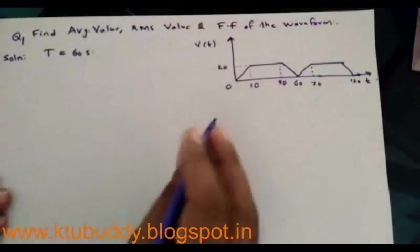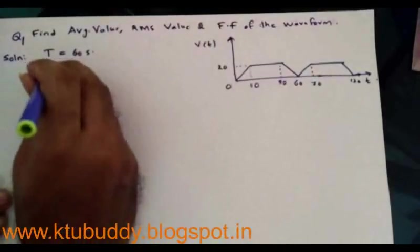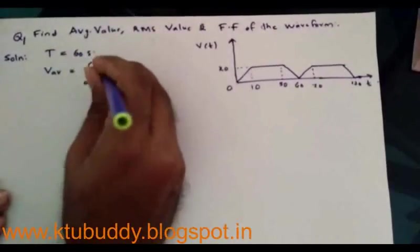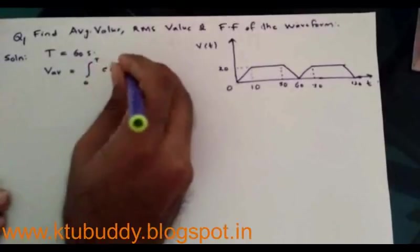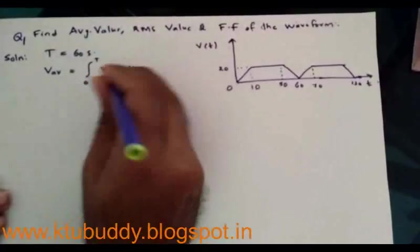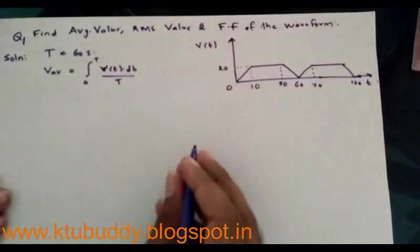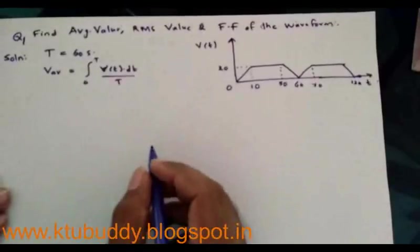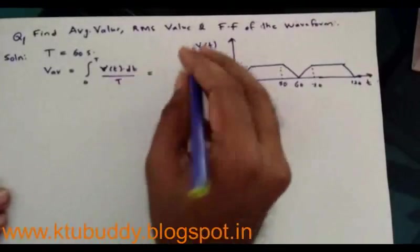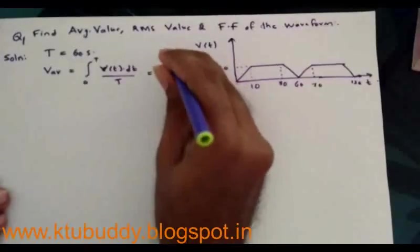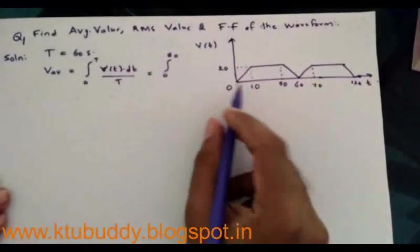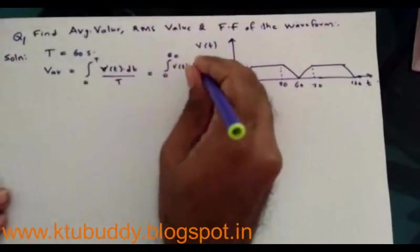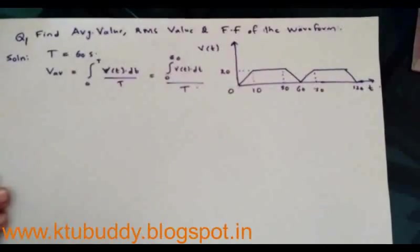To determine the average value, I have to compute the area of this complete trapezoid and then divide it by the time period. Therefore, V_average is equal to the integral from 0 to T of v(t) dt, divided by T. That is, integral from 0 to 60 of v(t) dt, divided by 60, will give the average value of the waveform.